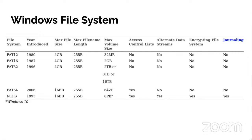NTFS does have file system compression. It supports 16-bit Unicode for international appeal. It has access control lists to enable permissions associated with files and folders, and also journaling. NTFS also maintains an Update Sequence Number, or USN, that records the time of change, the reason for change, the file or directory name, its attributes, the master file table record number, the file record number of the file's parent directory, a security ID, the update sequence number of the record, and information about the source of the change.